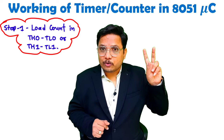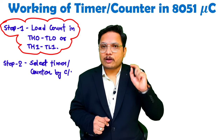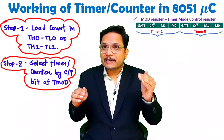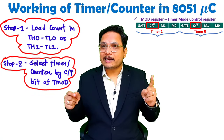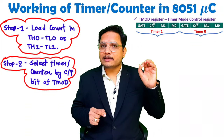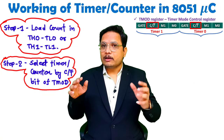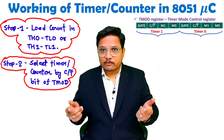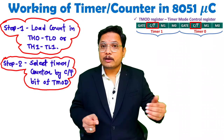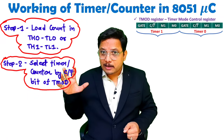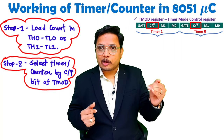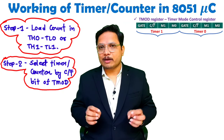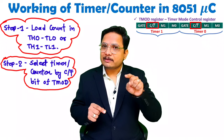The second stage is to select the given timer as a timer or counter. Inside the T-Mode register we have the CT bar bit. By keeping the CT bar bit equal to 1 you can operate it as a counter, and by keeping it at 0 you operate it as a timer. Timer means the internal clock provided by the 8051 will be counted, while counter means an external clock will be counted. The CT bar bit defines this selection.